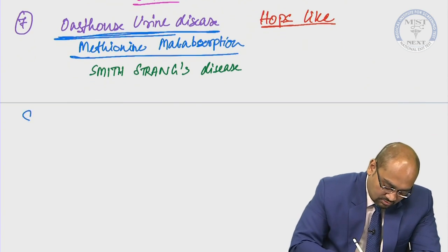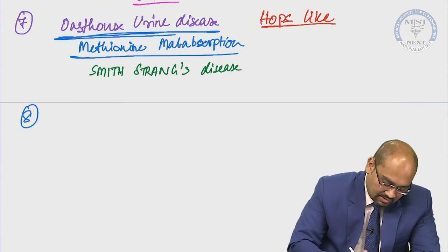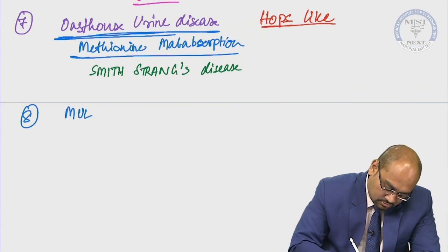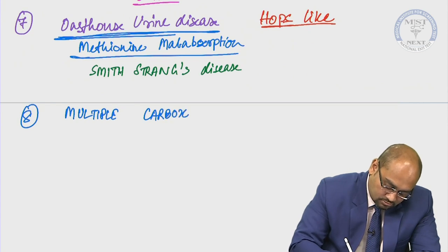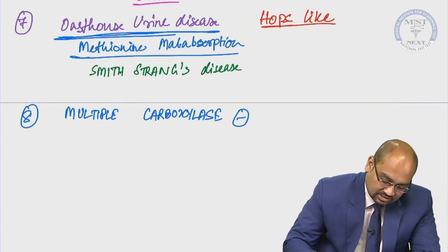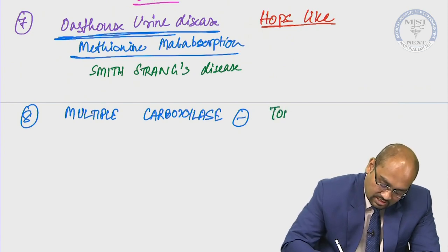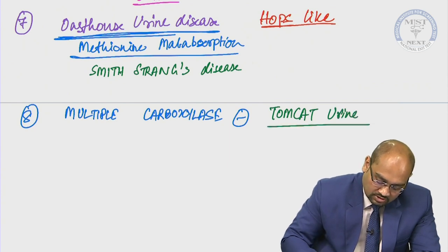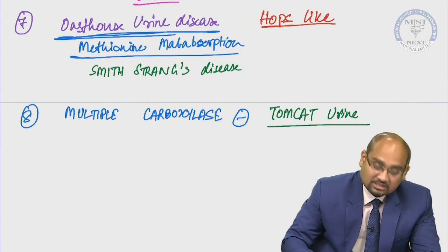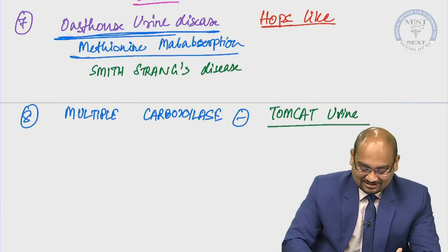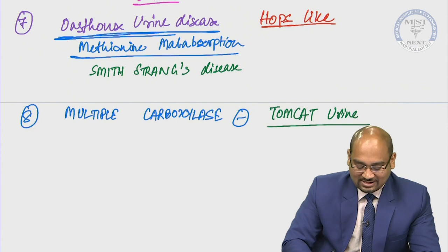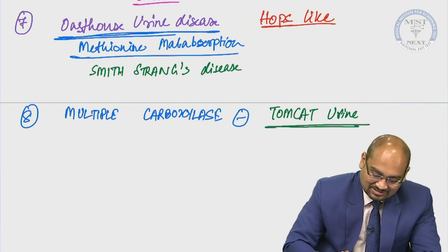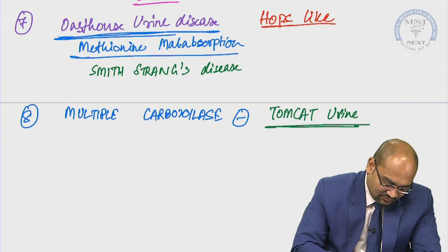The eighth one: please remember we have multiple carboxylase deficiency. In multiple carboxylase deficiency, the abnormal odor is tom cat urine. The name of the odor is specifically written as tom cat urine.